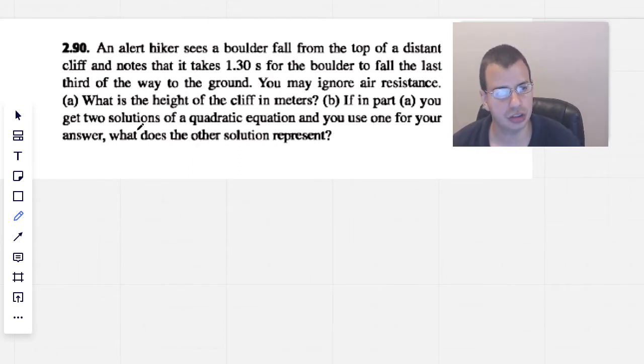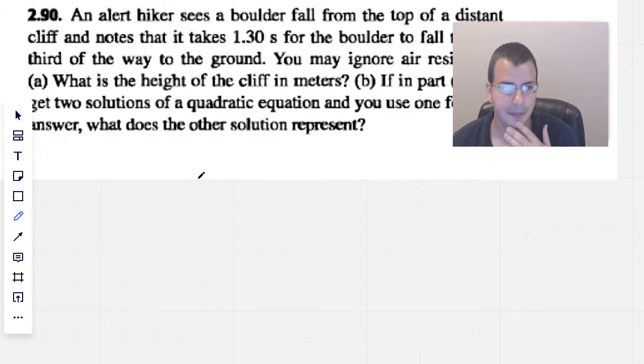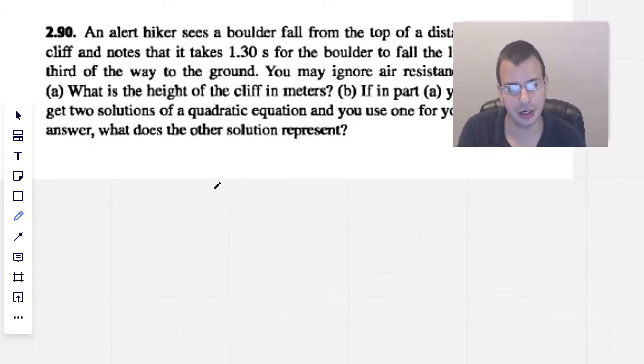If in part A you get two solutions of a quadratic equation and you use one for your answer, what does the other solution represent? Okay, so no idea what I'm doing here, so I'm just going to start plugging in things.